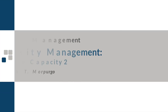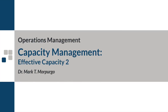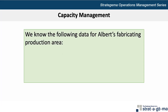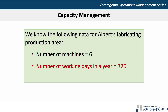This problem walkthrough video will demonstrate how to calculate the annual capacity of a production area. Here's the data for our problem. We know the following data for Albert's production factory area: the number of machines equals 6, the number of working days in a year equals 320, and the processing time per unit equals 25 minutes.